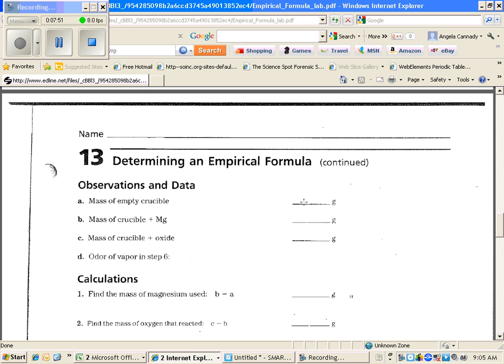So your grams of the empty crucible, the grams of the crucible and the magnesium ribbon before you reacted it, and the grams of the magnesium oxide, which is the product after you burned it. And then what does it smell like?